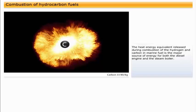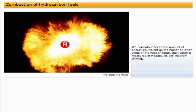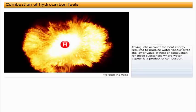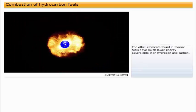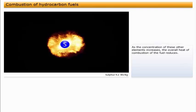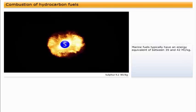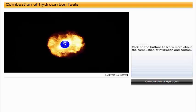The heat energy equivalent released during combustion of the hydrogen and carbon in marine fuel is the major source of energy for both the diesel engine and the steam boiler. We normally refer to the amount of energy equivalent as the higher or lower value of the heat of combustion, which is measured in megajoules per kilogram. Taking into account the heat energy required to produce water vapor gives the lower value of heat of combustion for those substances where water vapor is a product of combustion. The other elements found in marine fuels have much lower energy equivalents than hydrogen and carbon. As the concentration of these other elements increases, the overall heat of combustion of the fuel reduces. Marine fuels typically have an energy equivalent of between 39 and 42 megajoules per kilogram.